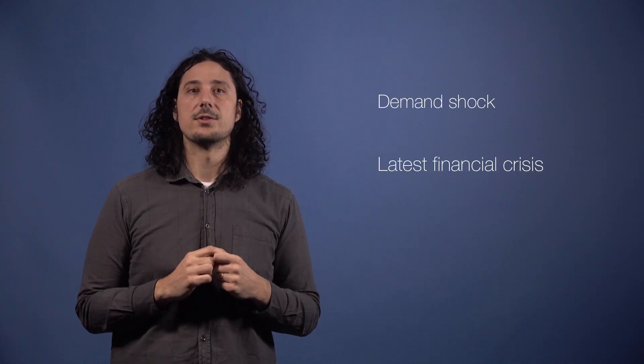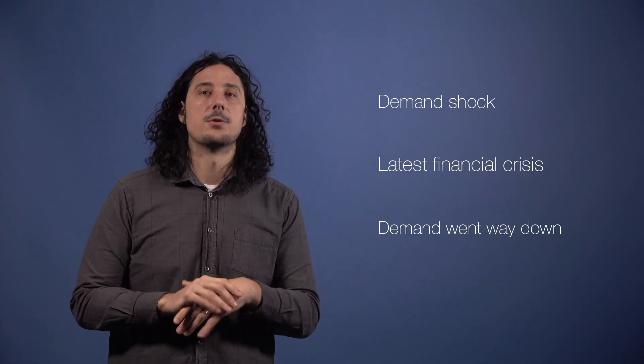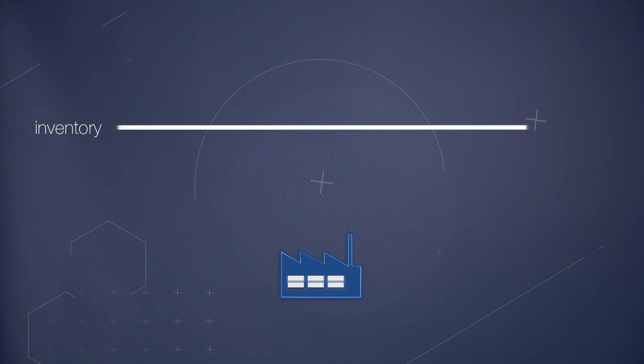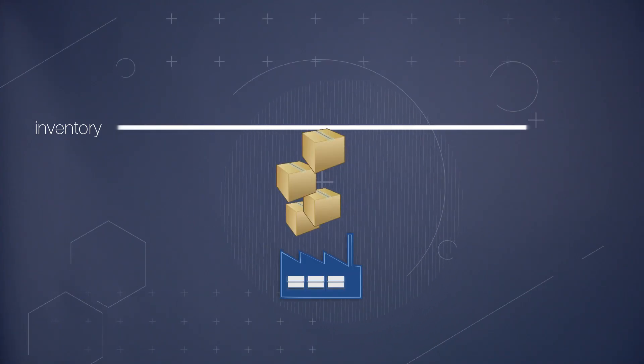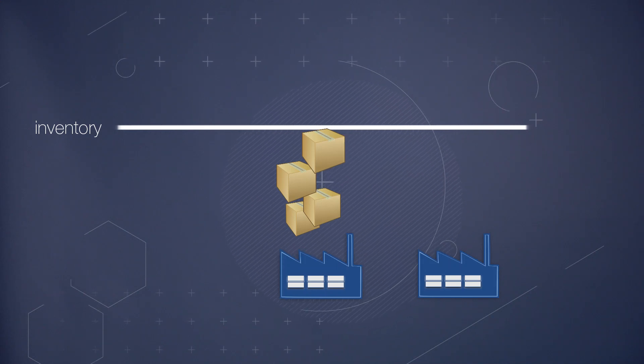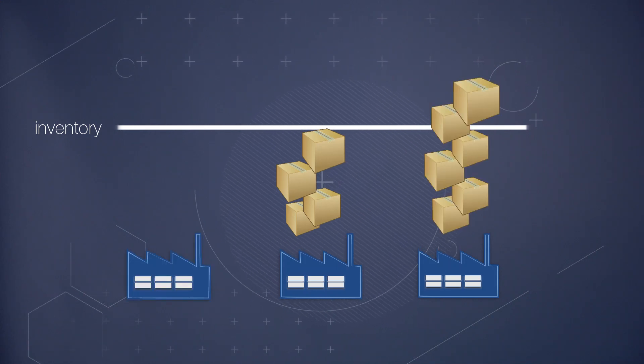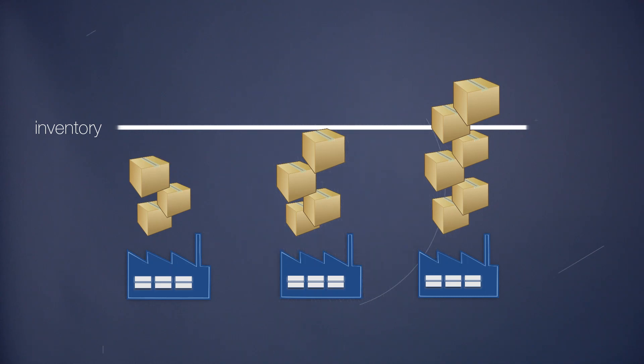We studied a big demand shock caused by the latest financial crisis. When this shock came demand went way down. Some firms were able to keep inventory stable, other firms were unable to react in time so their inventories went up, and yet others overreacted and lowered their inventories too much.